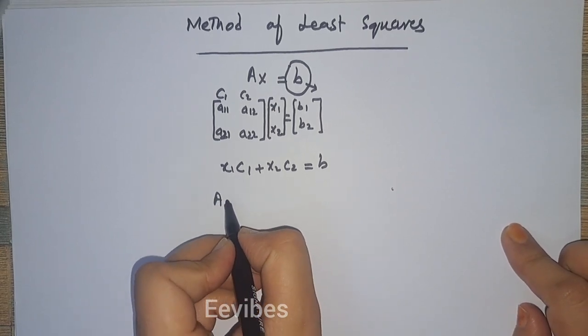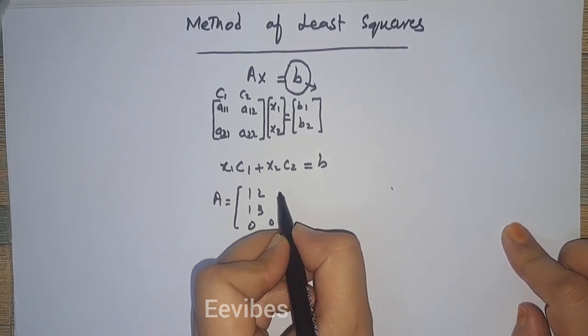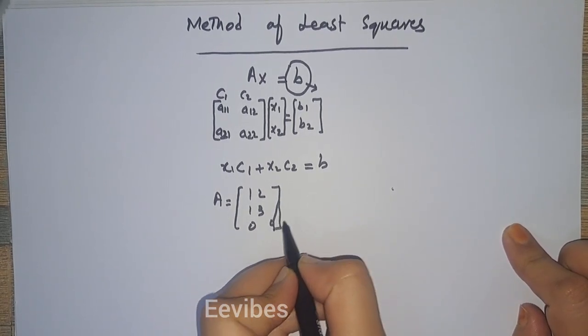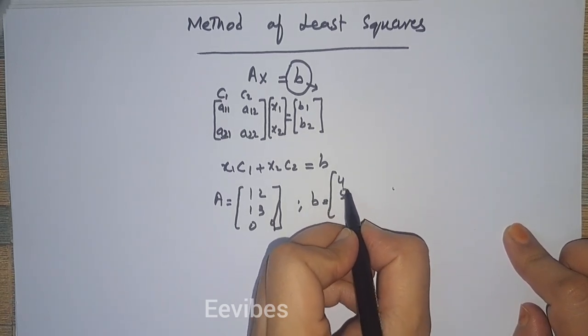Let's say if A is equal to [1, 2; 1, 3; 0, 0] and B is equal to [4, 5, 6].